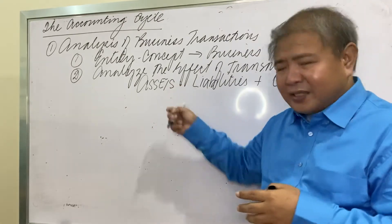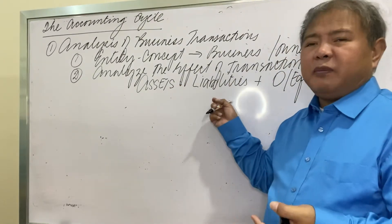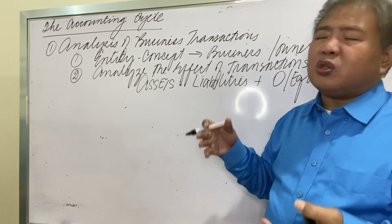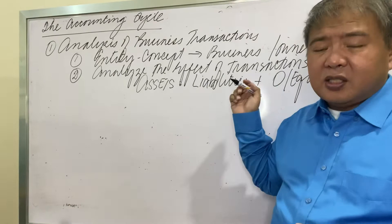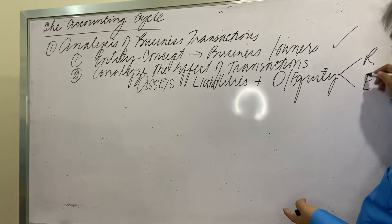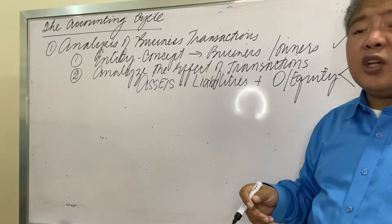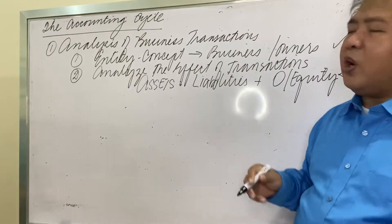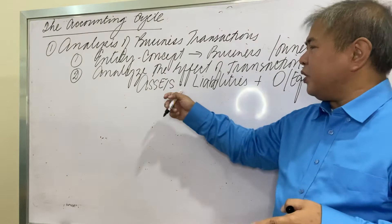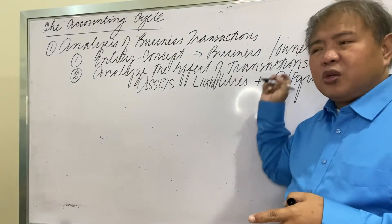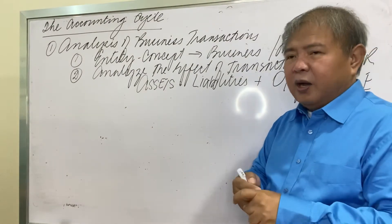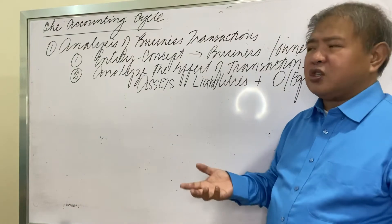We analyze whether the transaction increased assets, liabilities, or owner's equity. We also consider revenues and expenses, which are extensions of equity. The second step is to analyze the possible effect of the transaction on the company's assets, liabilities, equity, revenues, and expenses.